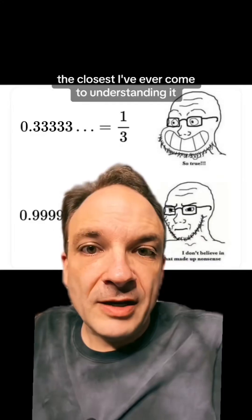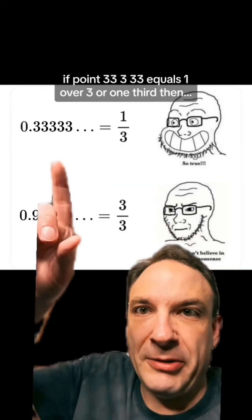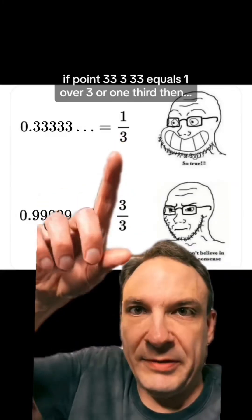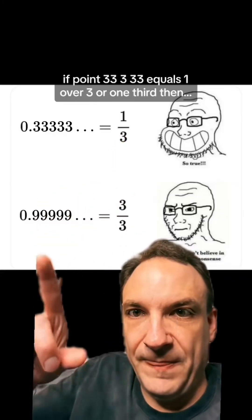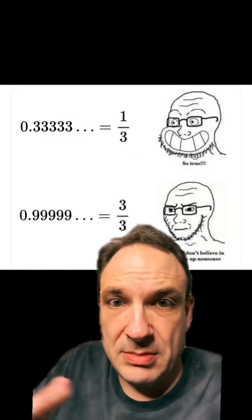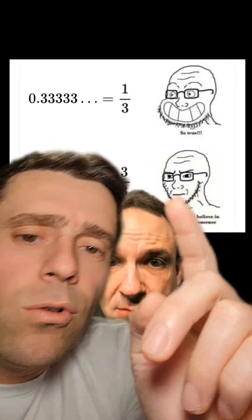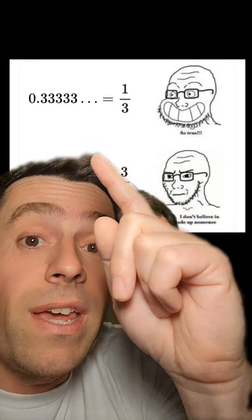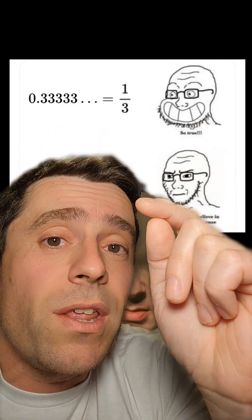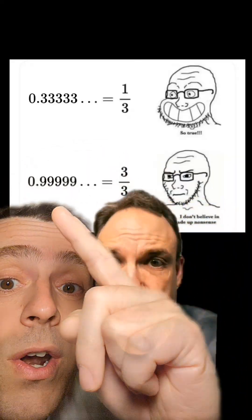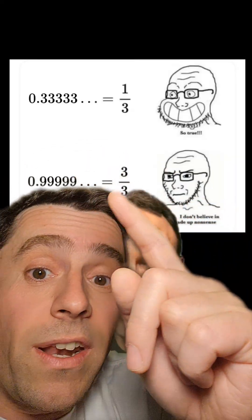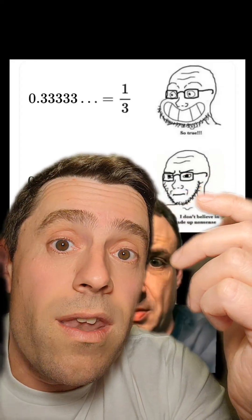The closest I've ever come to explaining it is if 0.33333 equals 1 over 3, 1 third, then... What surprises me the most is that people like him find this argument compelling, so they are willing to accept that 0.3333 with infinitely many 3s is a third because if there are not infinitely many 3s, then it is not a third, but they are not willing to accept that 0.999 is equal to 1.